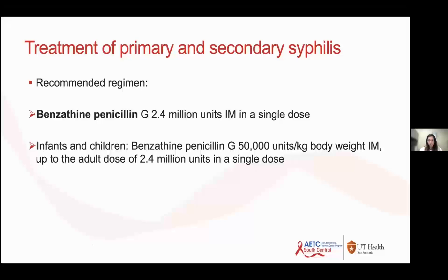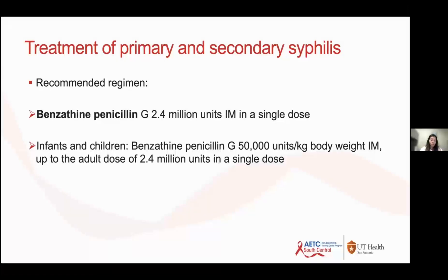The treatment of primary and secondary syphilis is the same. The recommended regimen is benzathine penicillin as a single dose. It is an extremely painful injection, so tell your patients — especially if they have a desk job — they might be sore for the rest of the day. Nurses generally split the dose: 1.2 million units in each gluteus. For infants and children, dose-adjust to 50,000 units per kilogram body weight, up to a maximum of the adult dose.